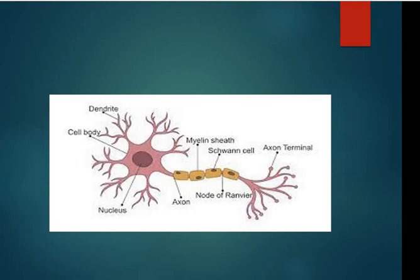The gap in the myelin sheath is called the node of Ranvier. Its purpose is to speed up the nerve impulse along the axon. The last part of the axon is called the axon terminal. This is where the synaptic cleft is located, connecting to the brain, spinal cord, or different parts of the body.